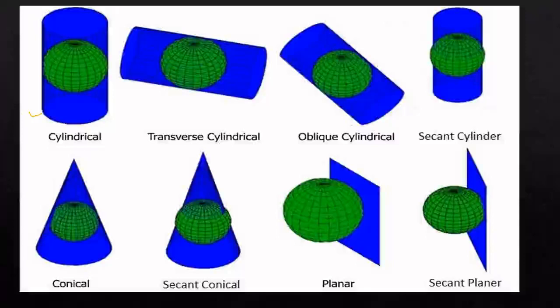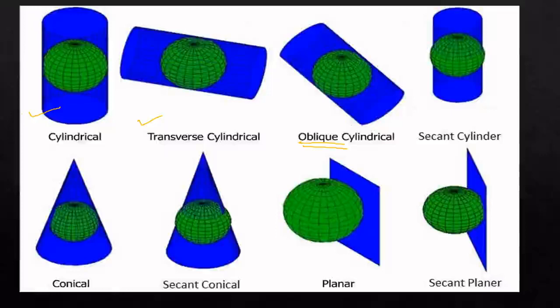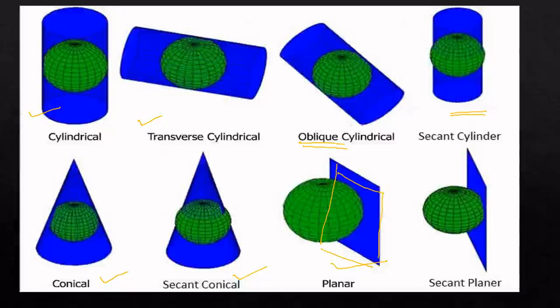You can see the cylinder and how the earth is projected in cylindrical form. The second one is the transverse cylindrical form — you can see the transverse cylinder and how the earth is projected. This is oblique cylindrical, where the cylinder is at some angle. This is the secant cylinder. Similarly, we have conical, secant conical, planar surface, and secant planar.